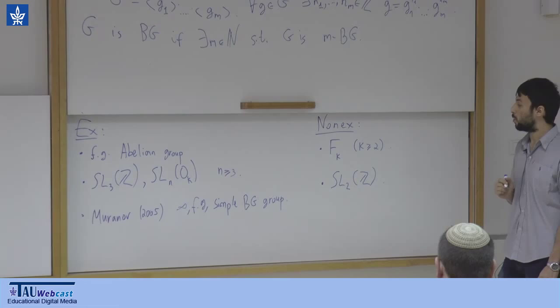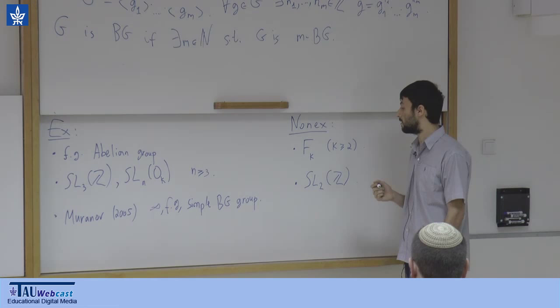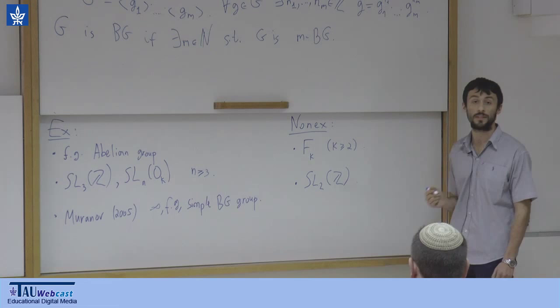My second non-example is SL2(Z), to contrast with SL3(Z). Some linear groups are not boundedly generated. The reason is that if you have a boundedly generated group and go to a finite index subgroup, it is still boundedly generated, and vice versa. SL2(Z) has a finite index subgroup isomorphic to a non-abelian free group, so SL2(Z) is also not boundedly generated.